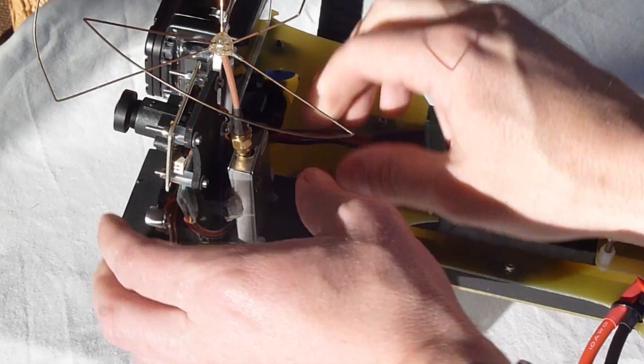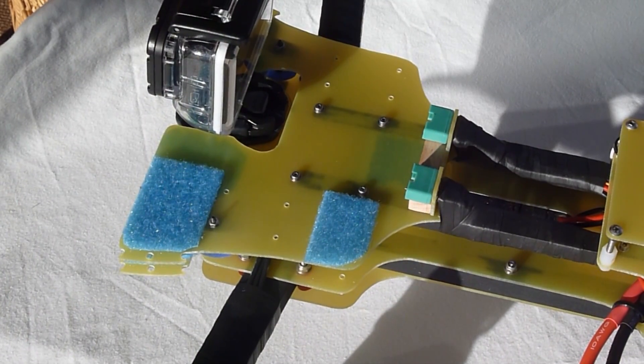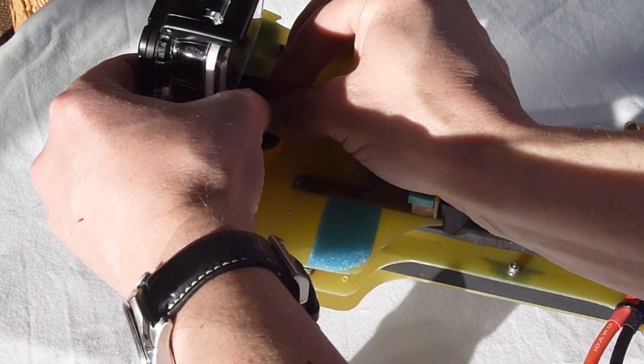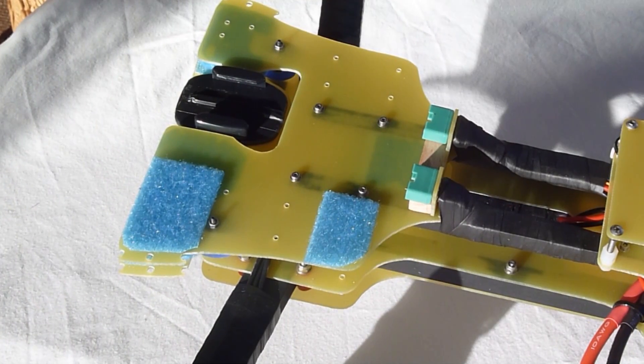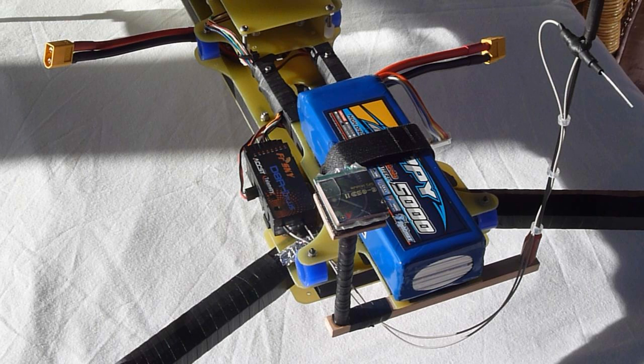The design separates the transmitters and the receivers. At the front of the multi rotor you've got the video transmitter and camera which can be fairly noisy and at the rear you've got the radio control receiver and antenna and the GPS receiver for the OSD.